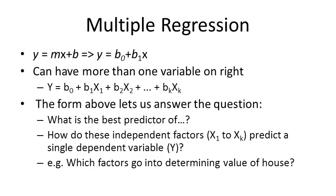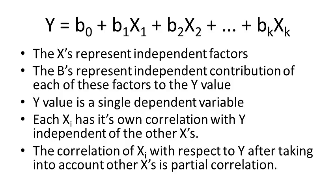This form allows us to ask questions like: what is the best predictor of y given all these variables x, and how do these independent factors x1 through xk predict a single dependent variable? A simple example is which factors determine the value of houses — the number of rooms, the location, and the type of neighborhood could all determine the overall price y. The x's represent independent predictors, the b's represent each factor's independent contribution to y, and y is a single dependent variable.